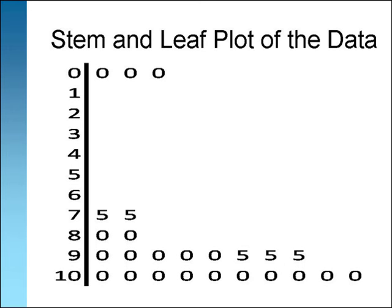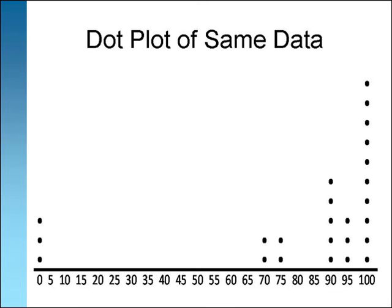Compare your stem and leaf graph to the one shown here. Can you tell that the data is skewed to the left? Most of the scores are high with only a few low scores. The dot plot on the next slide makes this easier to see.